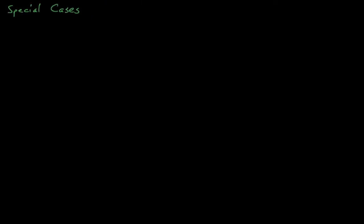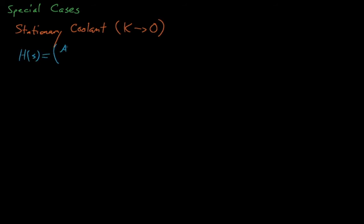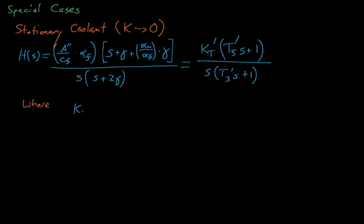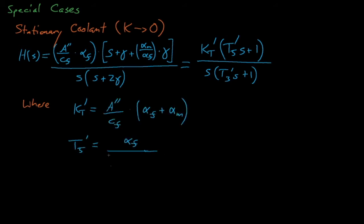What happens to our feedback control element if our coolant is not circulating — that is, if we have stationary coolant? In this case, our recirculation time constant approaches infinity since the coolant will never recirculate, which means that kappa approaches zero. If we allow kappa to approach zero in our previous expression, it simplifies to a new expression for h(s).